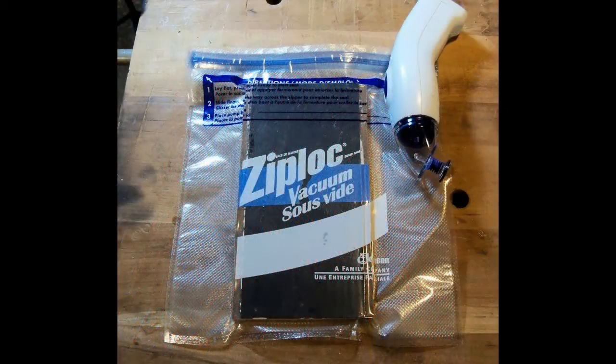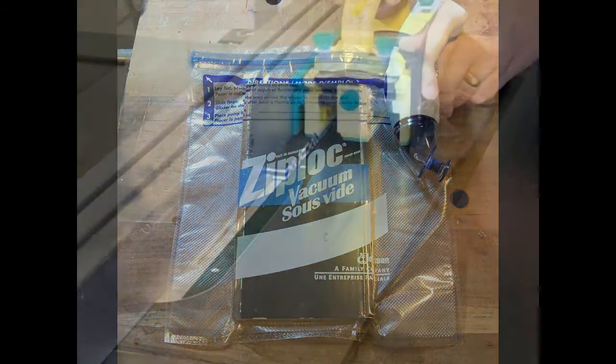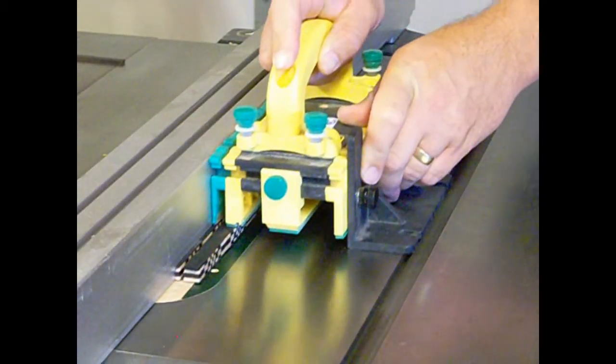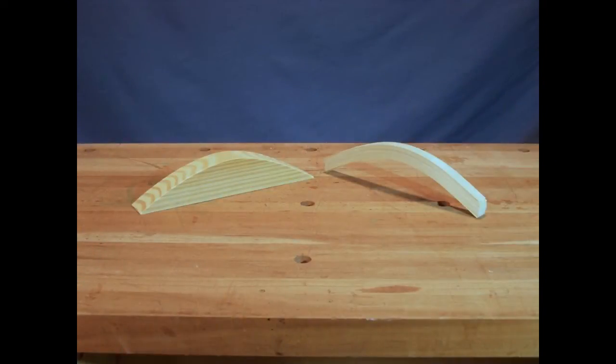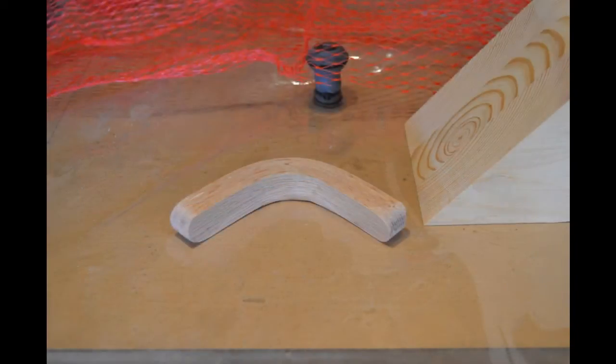And for smaller parts, I've even had good results using a vacuum freezer bag system bought at the grocery store for my kitchen. So while they can be a bit pricey to get into, and they do have a bit of a learning curve, a vacuum press system is a great way to create formed wooden parts from laminations.